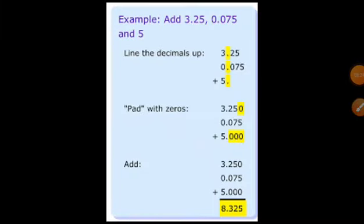Here you can see a step-by-step procedure for the addition of decimals. First, line up the decimal points. Then pad with zeros — introduce extra zeros to bring all numbers up to the highest number of digits present in the decimal part. Next, continue with the addition as you do the addition of whole numbers.